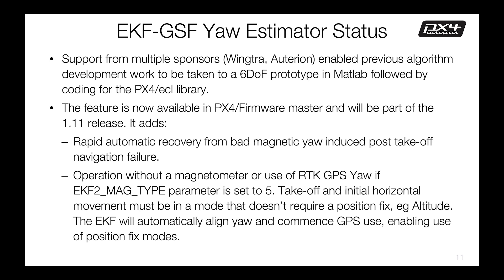This feature is now available in PX4 firmware master and will be part of the next stable release. We get automatic recovery from bad magnetic yaw and the ability to operate without a magnetometer — perform horizontal position or velocity change to align the yaw, then commence normal navigation. The work has been funded thanks to Wintra and Auterion, who enabled the original development to be taken into a six-degree-of-freedom prototype, followed by coding for the PX4 ECL library.